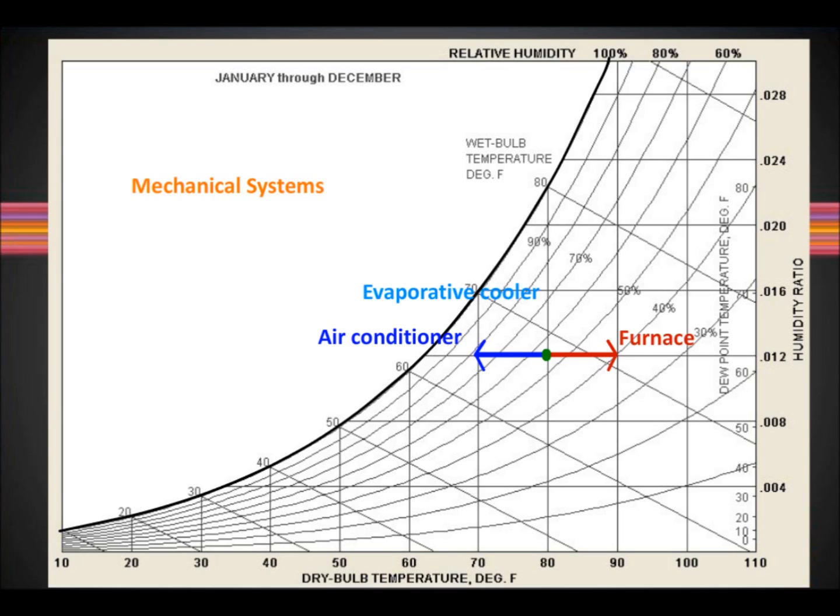An evaporative cooler can reduce dry bulb temperature while increasing humidity. An air conditioner can dehumidify air by cooling it below a dew point which will precipitate water out of the air. And then the air can be reheated to a comfortable dry bulb temperature but now with a lower absolute humidity.